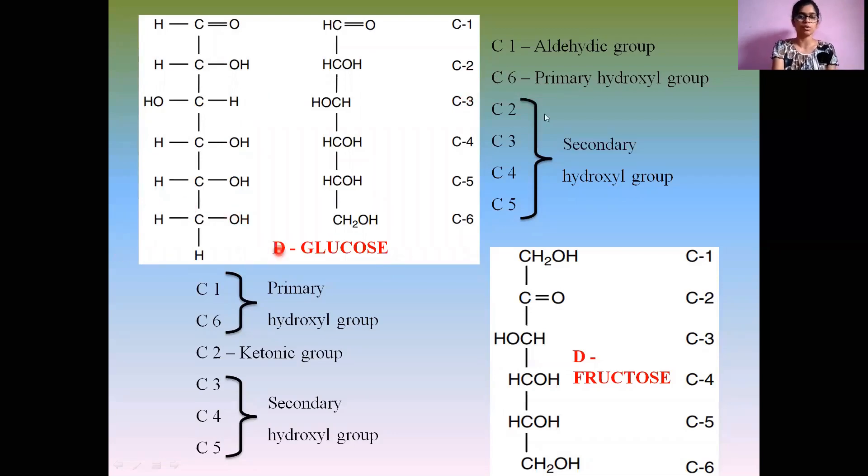The in-between molecules, C2, C3, C4, and C5, represent the secondary hydroxyl group. This secondary hydroxyl group plays a very important role in exhibiting isomerization phenomena.